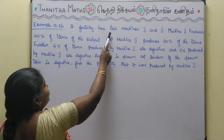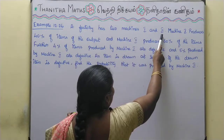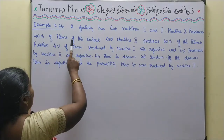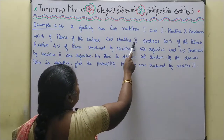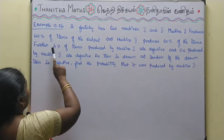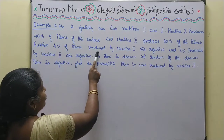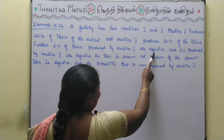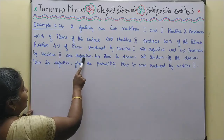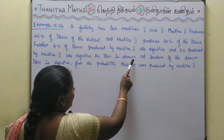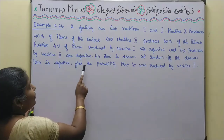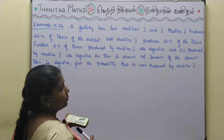A factory has two machines, one and two. Machine 1 produces 40% of the output and machine 2 produces 60% of the items. Further, 4% of items produced by machine 1 are defective and 5% produced by machine 2 are defective. An item is drawn at random. If the drawn item is defective, find the probability that it was produced by machine 2.